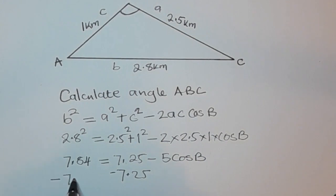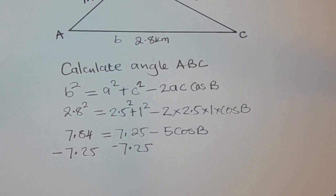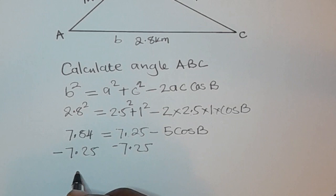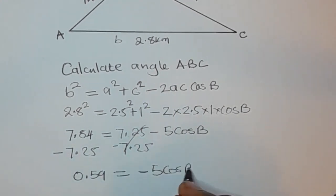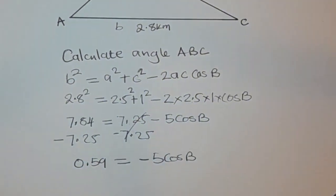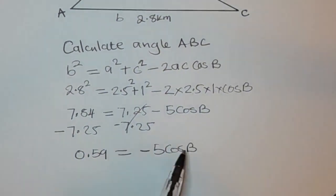So we have negative 7.25. 7.84 minus 7.25, you have 0.59 is equal to this becomes 0 minus 5 cos B.